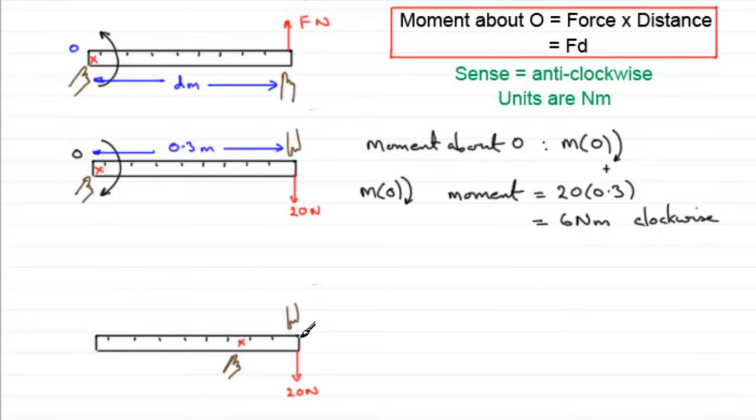Then we would need to apply another force, say at the end here, pushing downwards. Let's just mark that in. So you'd need to get somebody else to push, for instance, in this direction in order for that not to rotate about this point here, which we'll call O.